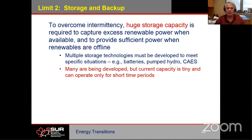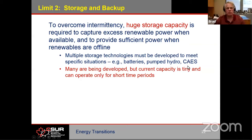Because of that intermittency, we have to have huge storage capacity to capture excess power when it's available and provide sufficient power when renewables aren't online. We need to talk about multiple storage technologies — batteries are great and we hear all sorts of things about battery technology, but we need other things too: pumped hydro, compressed air energy storage. Many interesting and potentially highly valuable new schemes of energy storage are coming on and being developed, but the current capacity is tiny and can operate only for short time periods. I saw a quote the other day saying that the United States today has enough total storage capacity to run the country for 14 seconds.